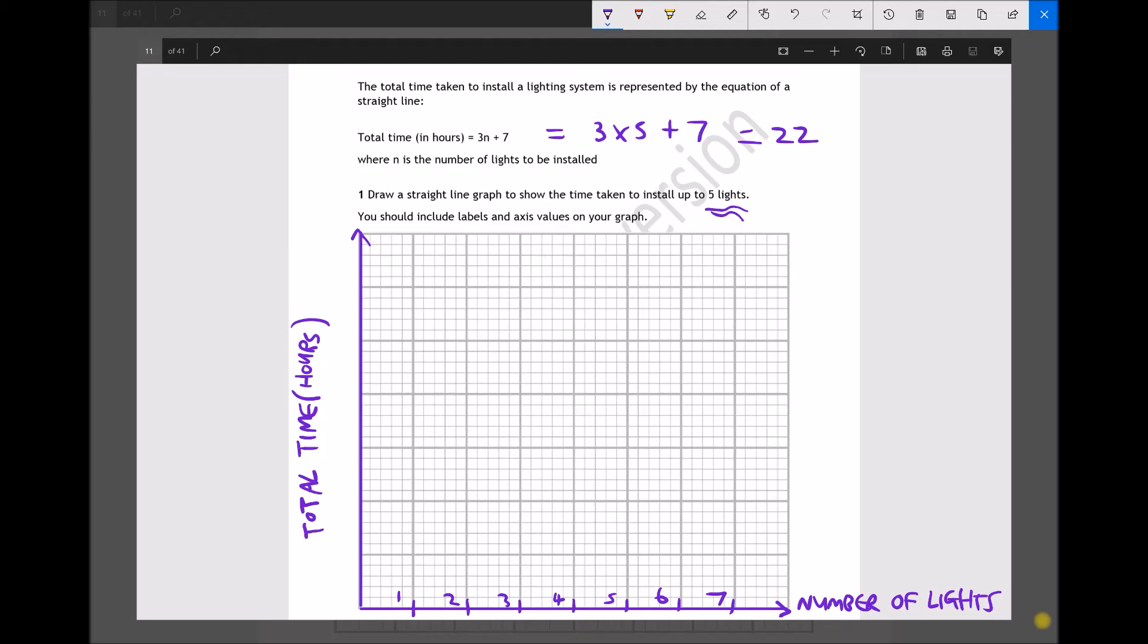Now if our axis on the left hand side needs to go up to 22, our best option is probably going to be to go up in 5s. So we'll have 5, 10, 15, 20, 25, 30. And let's label some of these: 5, 10, 15, 20, 25, and 30 hours.